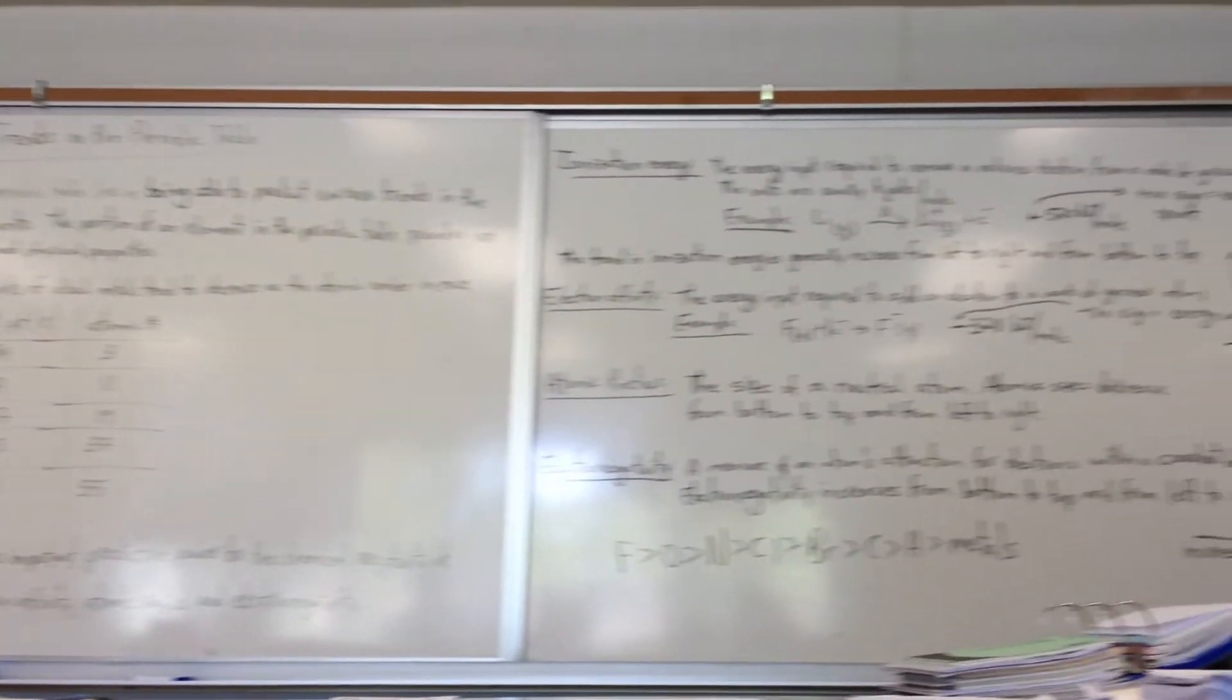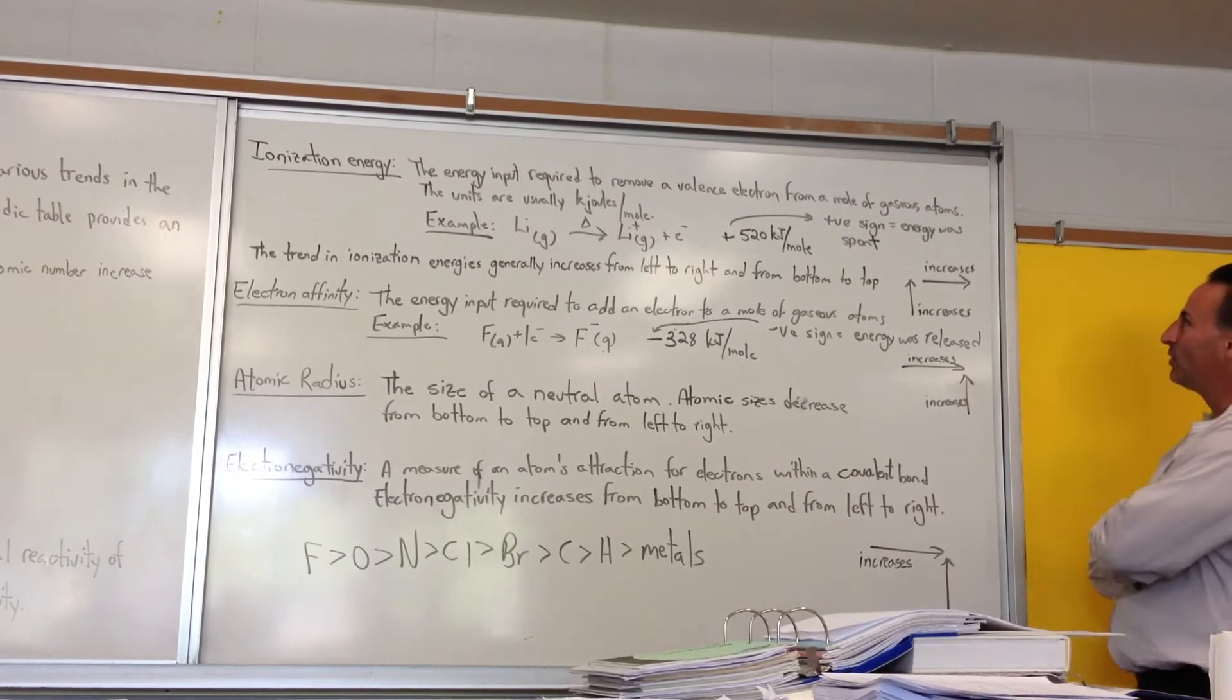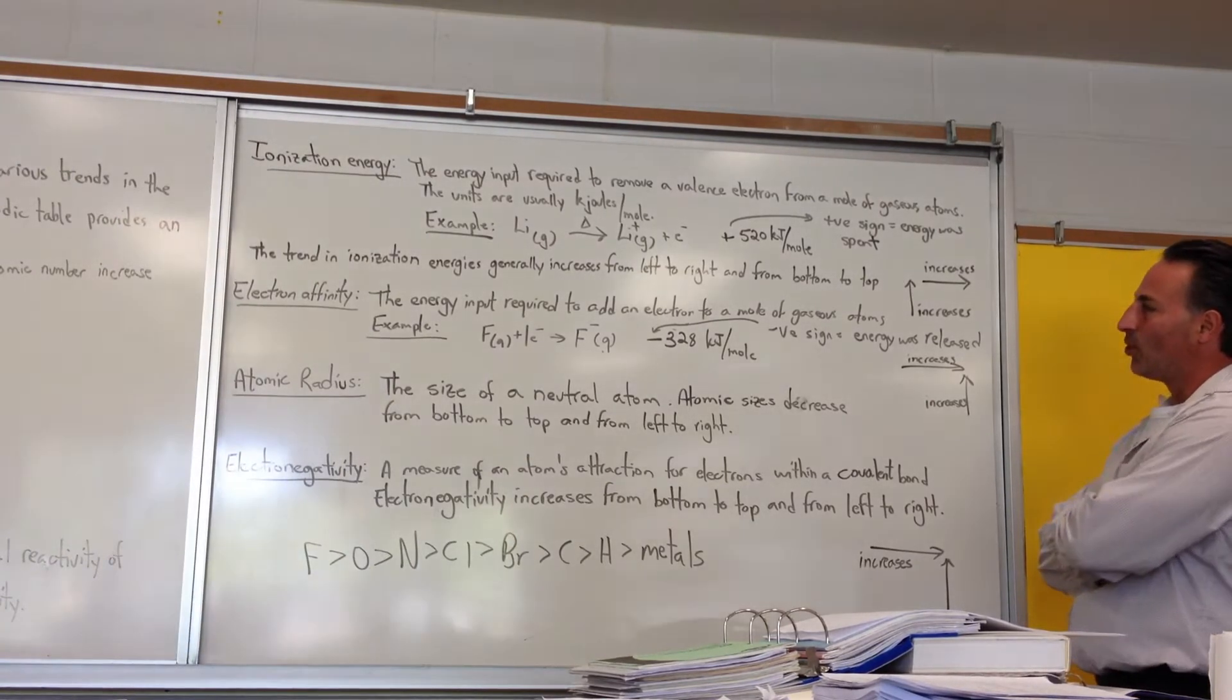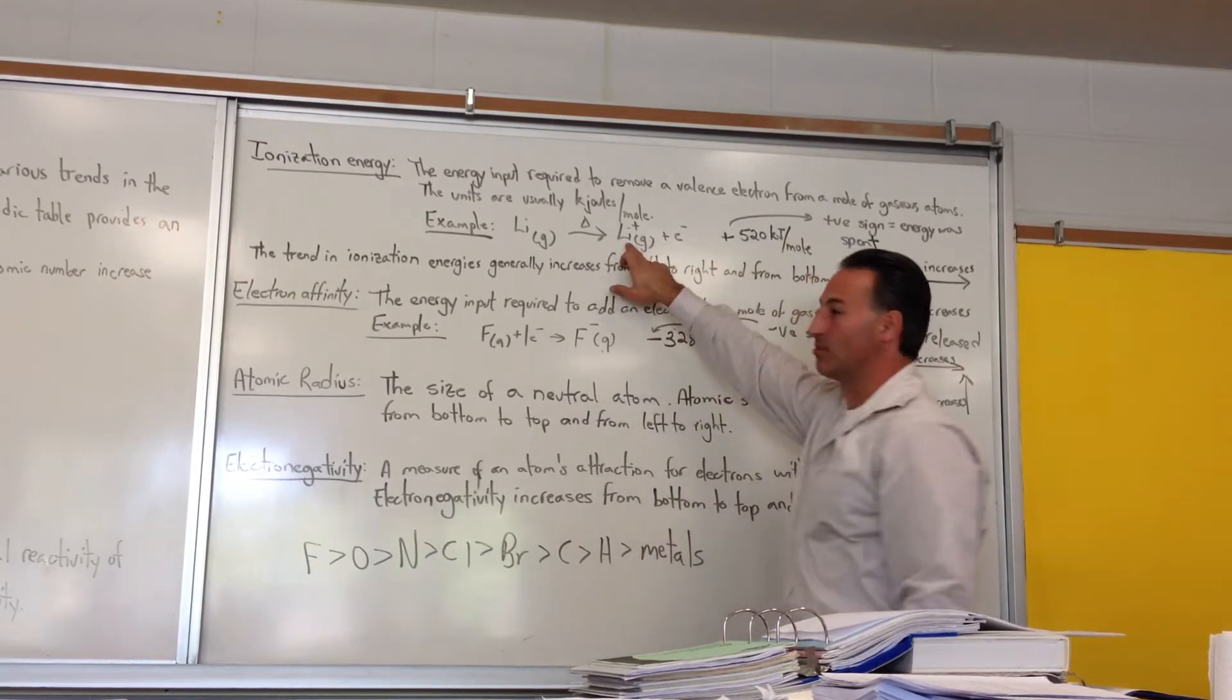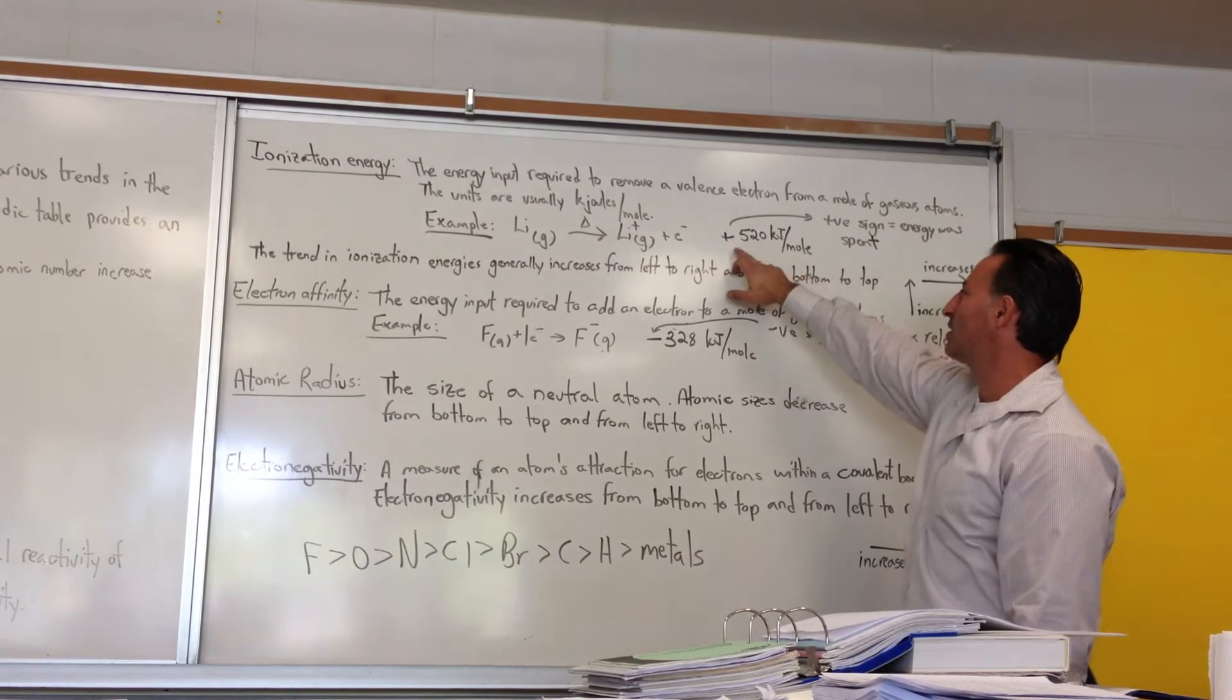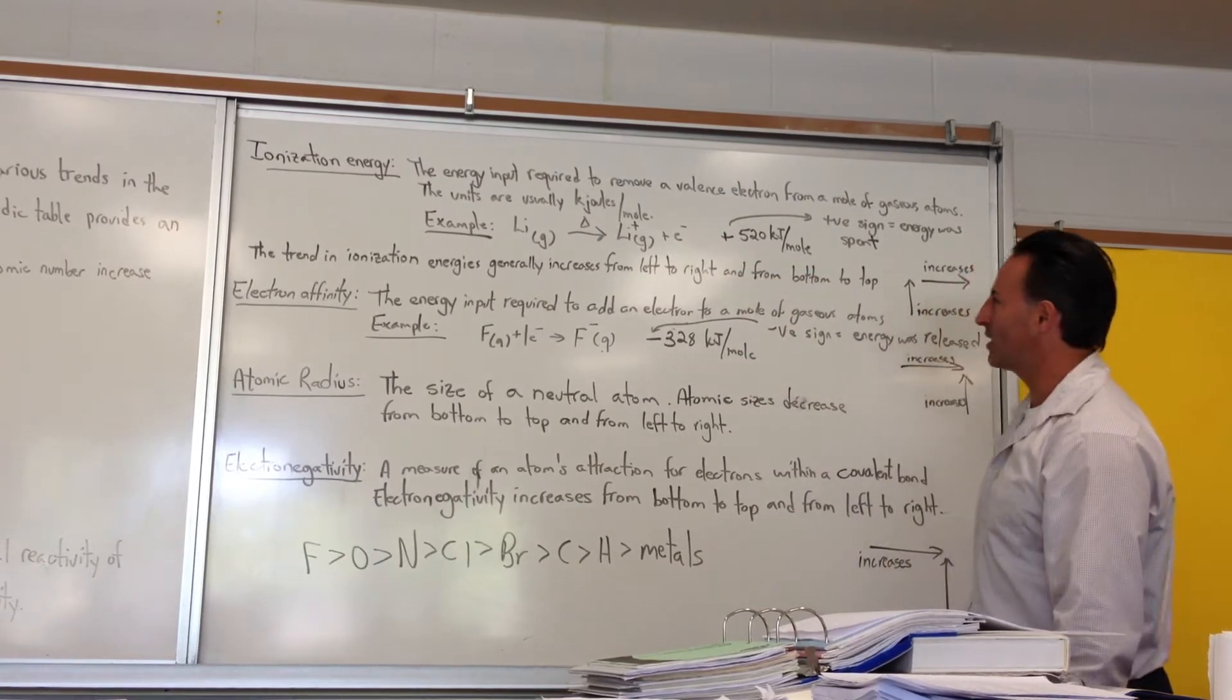The first one is the ionization energy. It is the energy input required to remove a valence electron from a mole of gaseous atoms. So if you have a mole of gaseous lithium, the amount of energy input required to turn it into lithium ions, a mole of lithium ions, is 520 kilojoules per mole. By the way, the conventions for this are that if you have a positive sign in front of it, it means you've had to pump energy into it. It's an endothermic reaction.